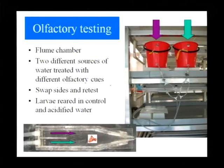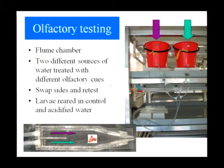The way we do this work is bucket ecology — nothing too sophisticated. We have a couple of buckets with different olfactory cues, feed water down into a little flume, and the larvae can sit in the flume and choose one water stream or the other. We can swap the water streams to make sure there's no side effect in the chamber, and we can do this for larvae reared in either control water or acidified water. This is where things started to get really interesting.